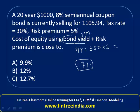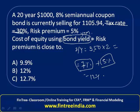One important thing to note: the bond yield in this question should NOT be adjusted for the tax rate. That information is extra and is not to be factored in. So we simply take the bond yield of 7% plus the risk premium of 5%, giving us a cost of equity of 12%, which is option B.